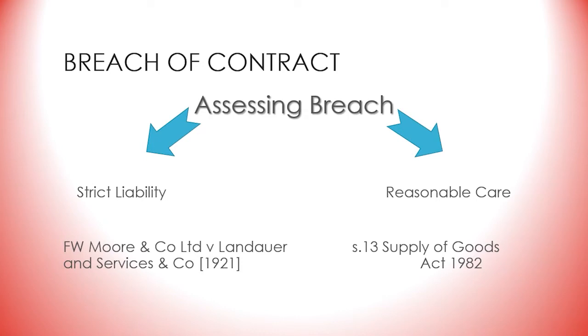Any discussion on remedies needs to start with an attempt to define what constitutes a breach of contract. A breach of contract can be summarized as the failure of a party to a contract without a lawful excuse — an example of a lawful excuse would be frustration — to perform their contractual obligations. A breach of contract gives rise to secondary obligations to pay damages, and exceptionally the party at fault may be forced to perform the obligation by an order of specific performance.